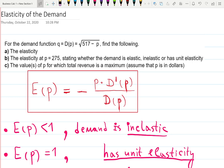Welcome to the video where we're going to be talking about elasticity of the demand function. In this example, we are given a demand function D = √(517 - p), where p is the price. We are asked to find the general function for the elasticity.